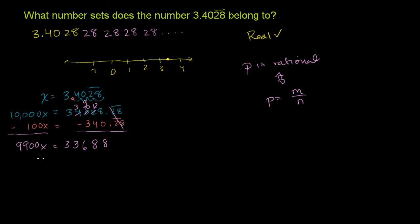Now, if we want to solve for x, we just divide both sides by 9,900. Divide the left by 9,900. Divide the right by 9,900. And then what are we left with? We're left with x is equal to 33,688 over 9,900.